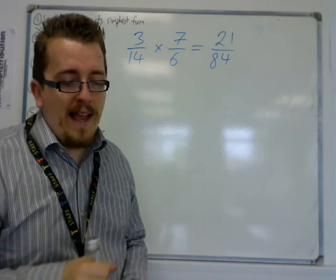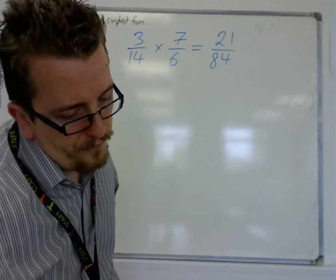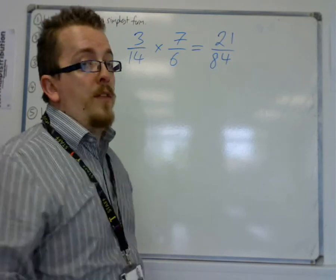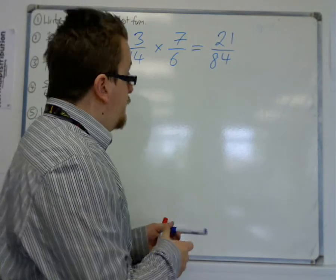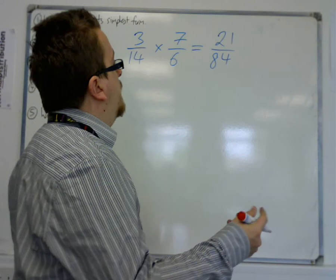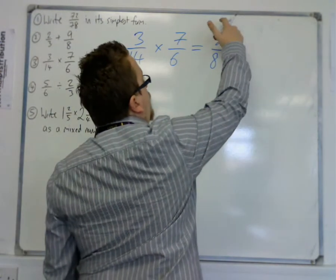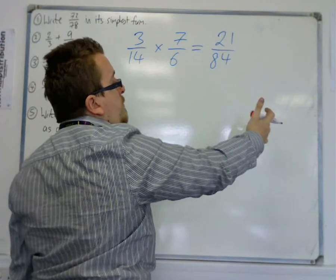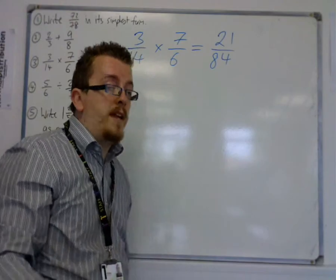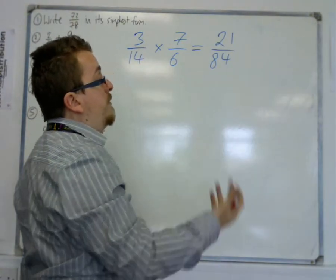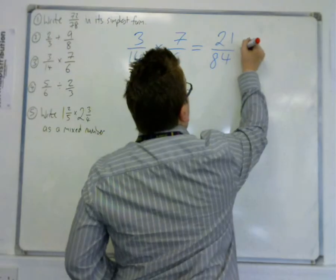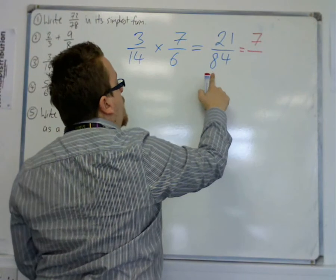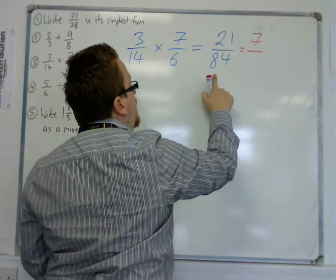Now, 21 over 84 can be simplified. You can divide top and bottom by 3, for example. The way that you can spot that is 2 plus 1 is 3, which can be divided by 3. 8 plus 4 is 12, which can be divided by 3. That's a little neat trick to figure out if a number can be divided by 3. So, divide top and bottom by 3, you get 7 over 28.